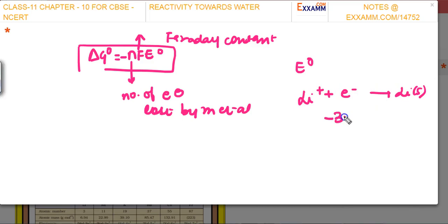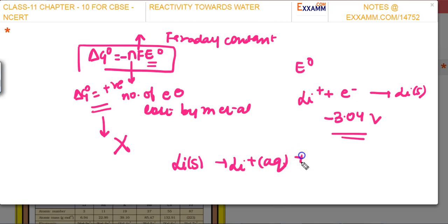This means if this is negative, then ΔG° will become positive, and if ΔG° is positive, then the reaction will not occur. But if we take the reverse, that is lithium gives Li+ aqueous plus electron, then ΔG° will have a very negative value. This means lithium liberates the most energy when it reacts with water.